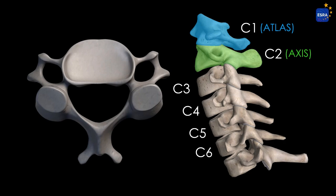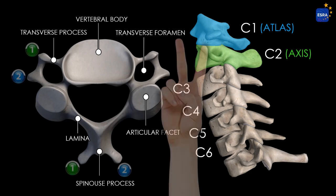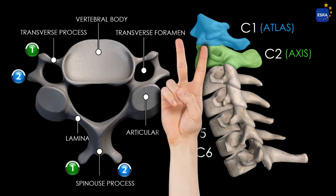Cervical vertebrae C3 to C6 are classified as typical cervical vertebrae, exhibiting conventional anatomical features including a small, rectangular-shaped vertebral body with a slightly biconcave superior surface. On each side are the uncinate processes, elevated lateral ridges contributing to the formation of the uncovertebral joints of Luschka. The vertebral foramen is broad and triangular, accommodating the cervical spinal cord. Transverse processes are perforated by transverse foramina, through which pass the vertebral artery, vertebral vein, and peri-arterial sympathetic plexus, except C7. The spinous processes are usually bifid, increasing surface area for muscle and ligament attachment.